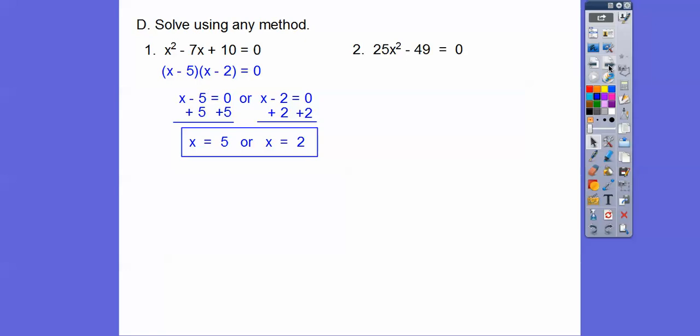All right, this one here. This is a difference of squares. This is, follow this pattern. x squared minus y squared is x plus y times x minus y. So it's 5x plus 7, 5x minus 7. Once you get it factored, then you can set the factors equal to 0. And then solve and then subtract 7 and add 7 and divide by 5 and we get plus or minus 7 fifths.